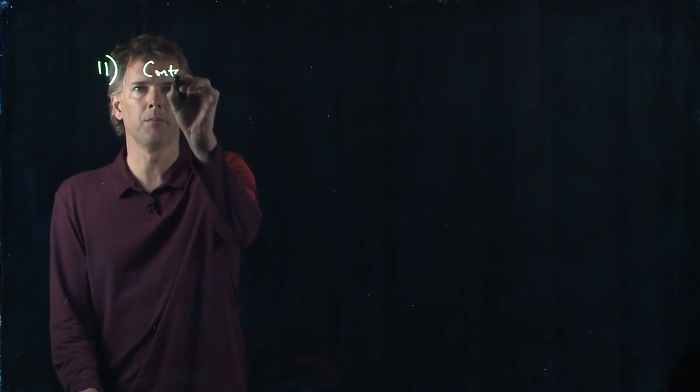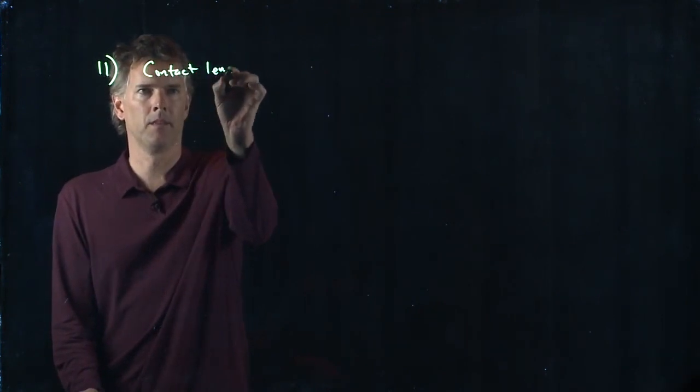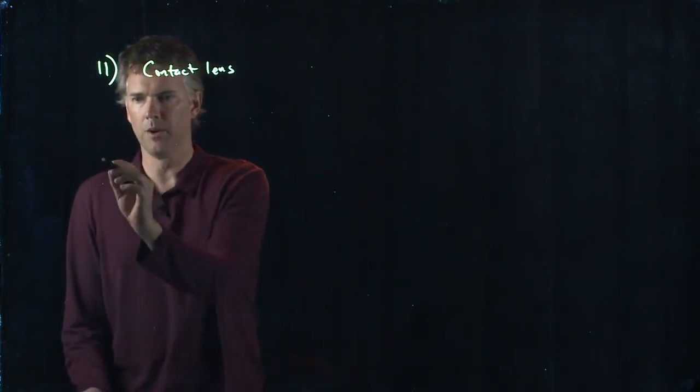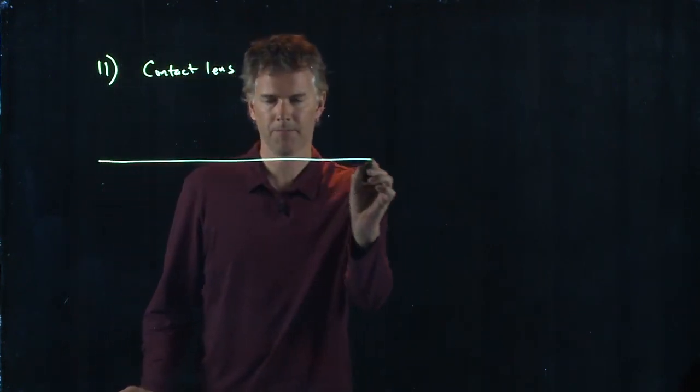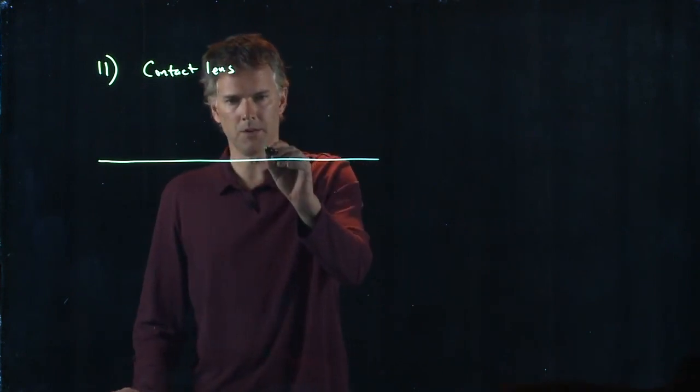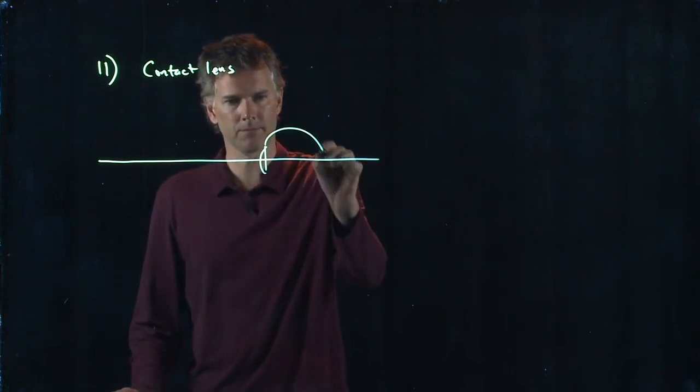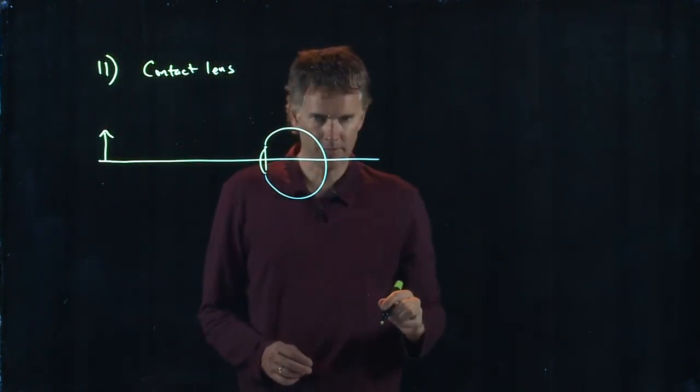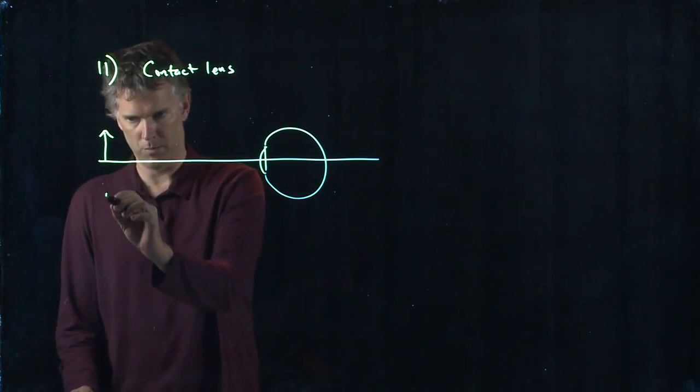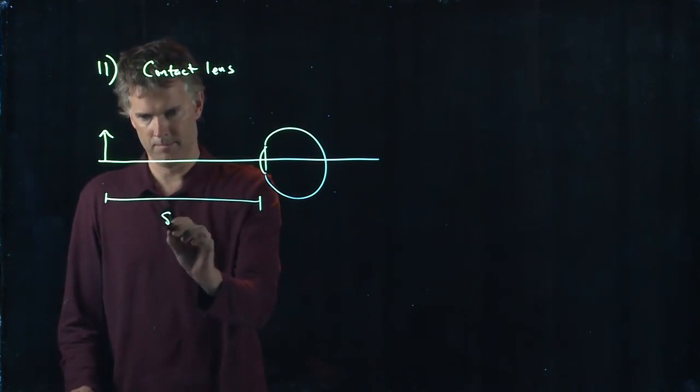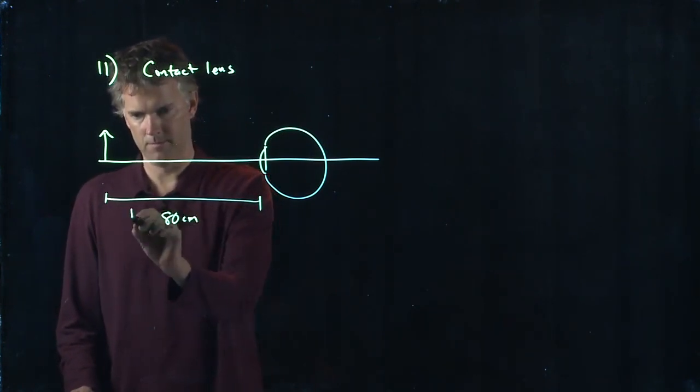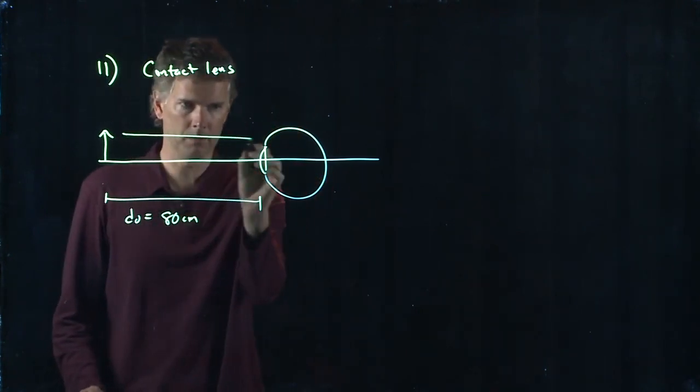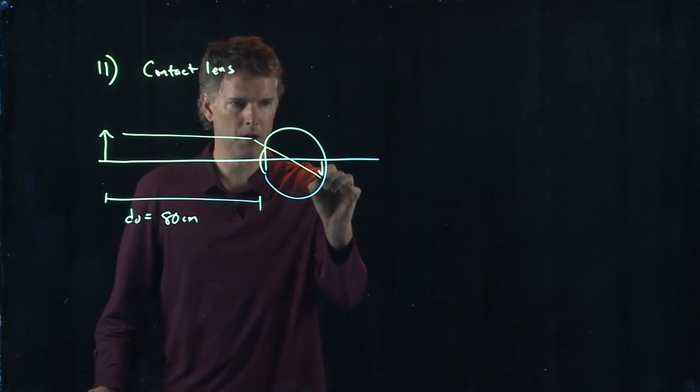This is a contact lens problem. Remember, a contact lens is just another lens that you put right in front of your eye. So let's draw the issue here. Here's her eyeball and she can see things that are 80 centimeters away, no problem, which means that she can focus that image onto her retina.